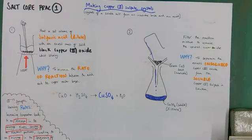Stage one: get your dilute sulfuric acid, because we're making a sulfate. Add a set volume into a beaker, then add an excess mass of black copper(II) oxide base and stir. This ensures the reaction goes to completion.